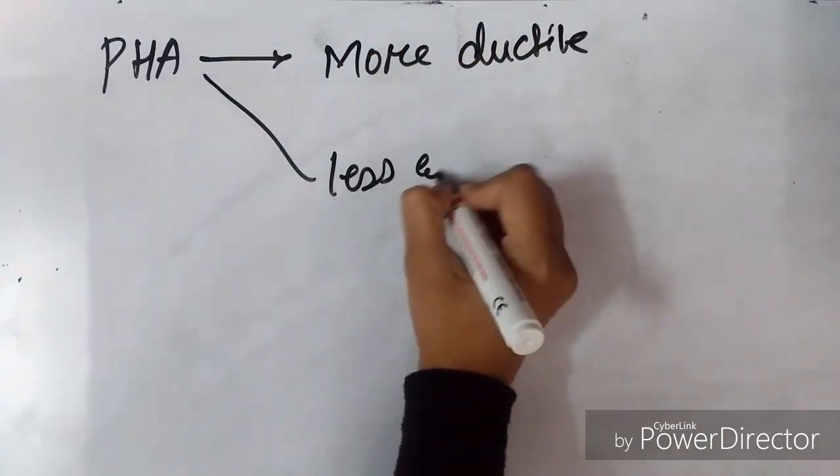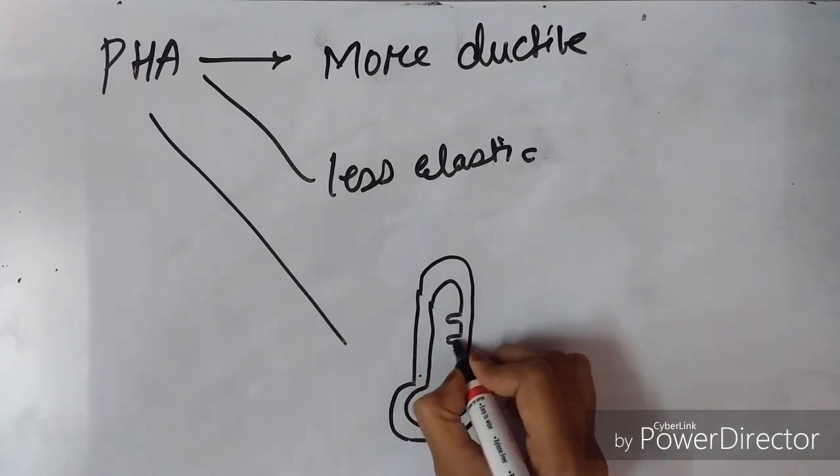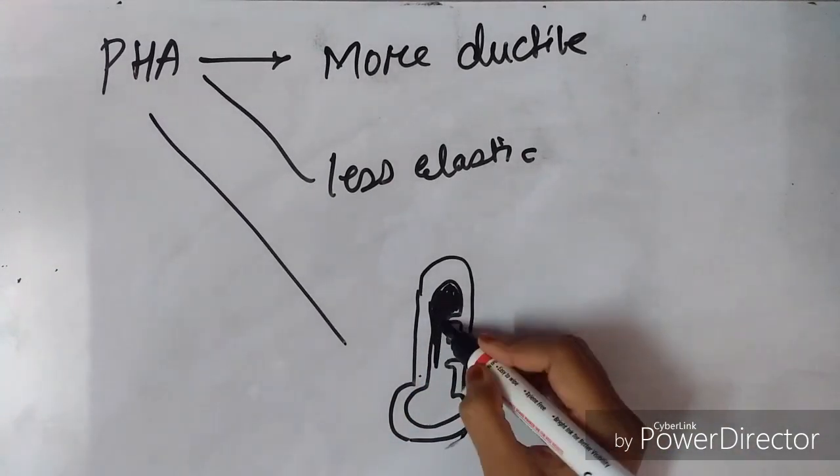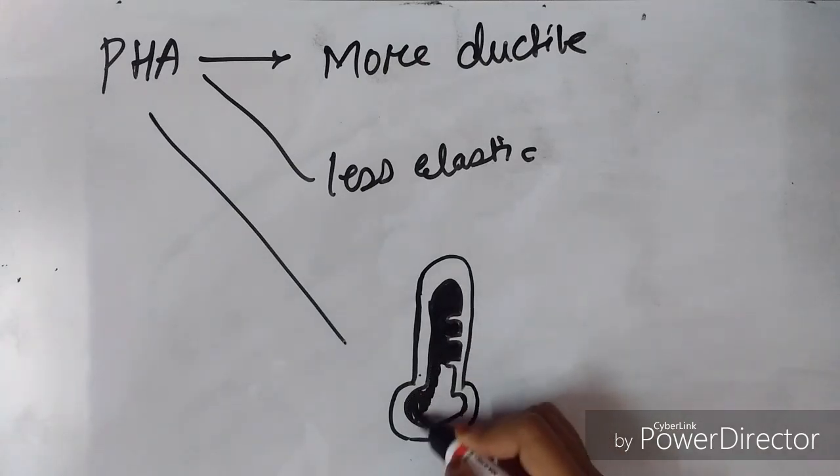PHA is more ductile and less elastic than other plastics available in the market. They can be either thermoplastic or elastomeric plastic.